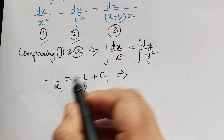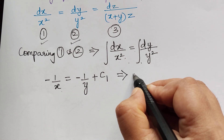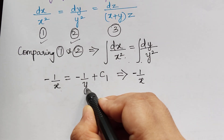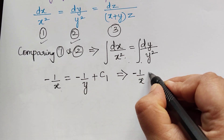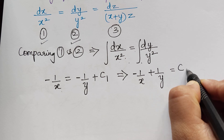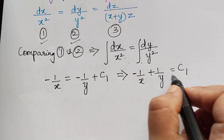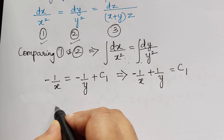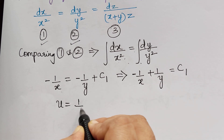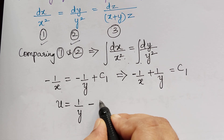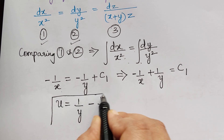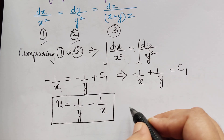From this, negative 1 by x plus 1 by y equals c1, which can be written as 1 by y minus 1 by x equals c1. Therefore the first solution u is equal to 1 by y minus 1 by x. So we have obtained one of the solutions.